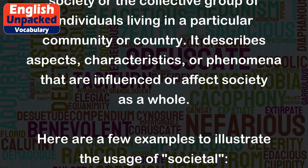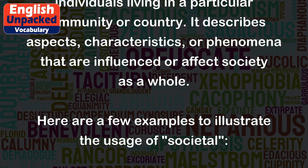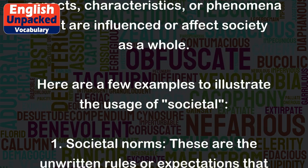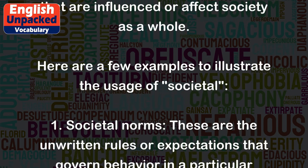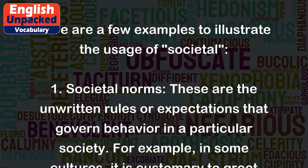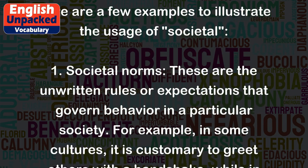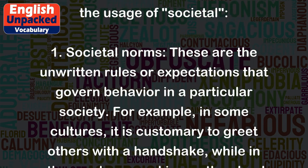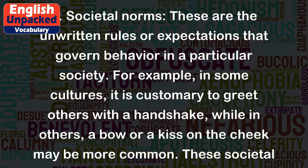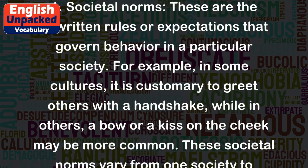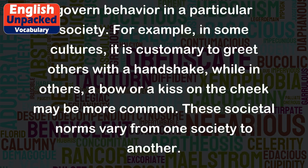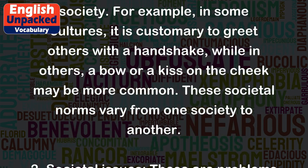Here are a few examples to illustrate the usage of 'societal'. 1. Societal norms: These are the unwritten rules or expectations that govern behavior in a particular society. For example, in some cultures it is customary to greet others with a handshake, while in others a bow or a kiss on the cheek may be more common. These societal norms vary from one society to another.